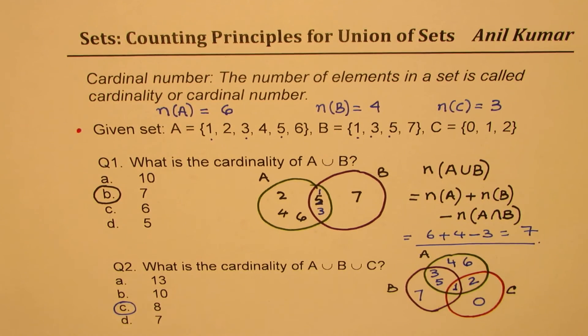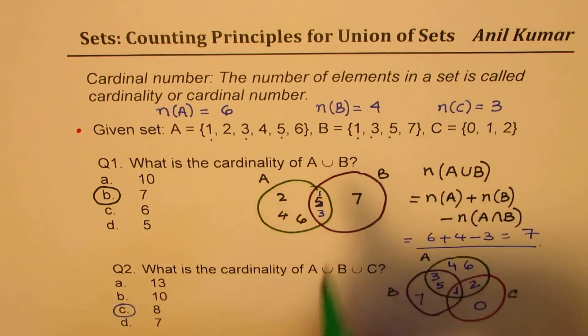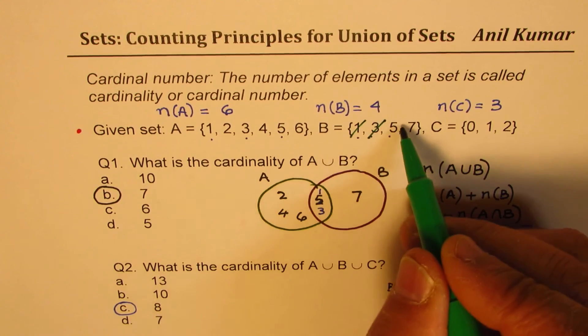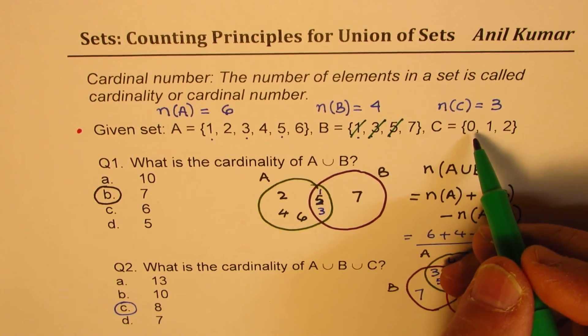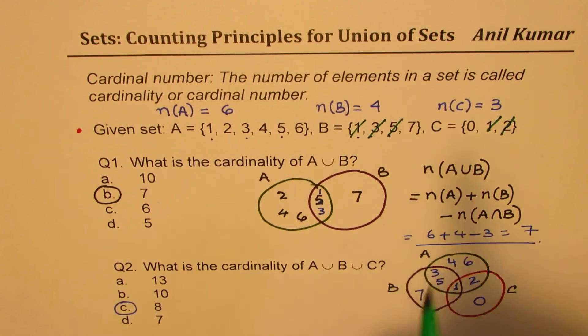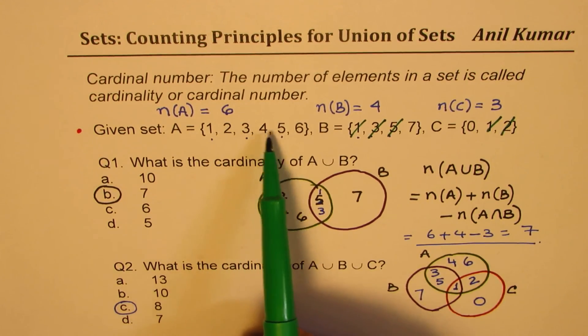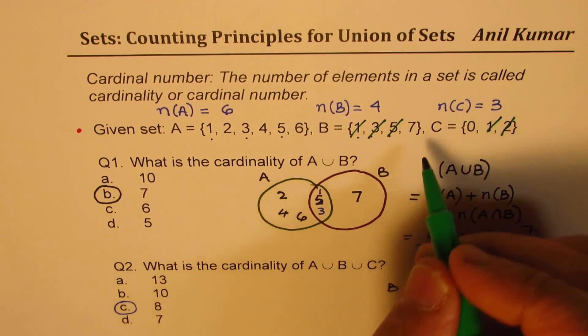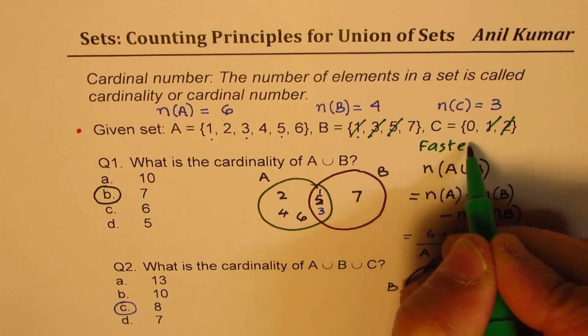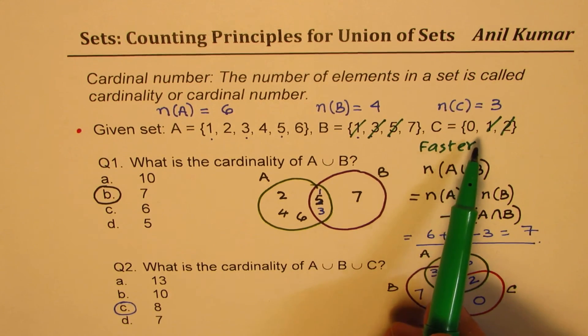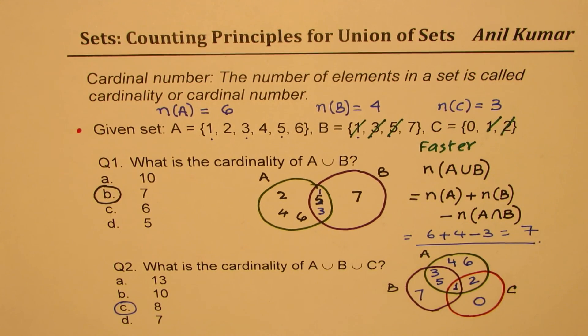So, if you look at it, when we're talking about these unions, you could do like this. One, we already counted. Three, we already counted. Five, we already counted. Not seven. As far as C is concerned, zero, we never count, but one and two, we had counted. So, now we have how many elements? We have one, two, three, four, five, six, seven, and eight. So, this is a faster way of doing it. So, if you are given the elements, just check them out and straightaway get your answer. I hope that helps you for multiple choice questions.